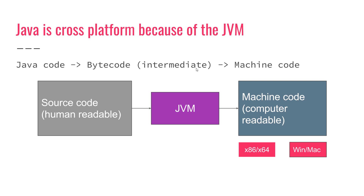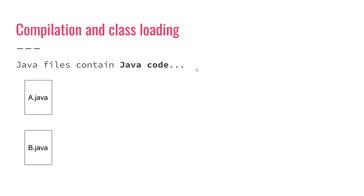While the machine code differs based on the platform, the bytecode is the same regardless of platform, making Java code extremely portable. For example, if you have a Linux machine, you have a JVM built for Linux which reads bytecode and outputs Linux machine code. If you have a JVM on Windows, it reads the same bytecode and transforms it into the corresponding Windows machine code.